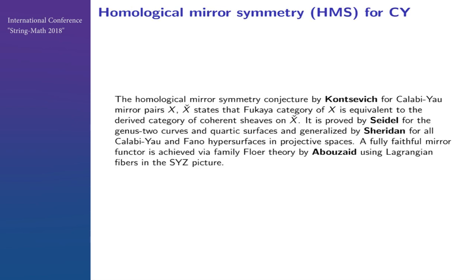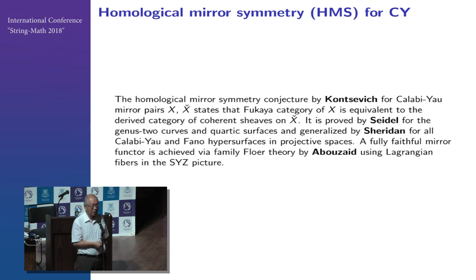Another important progress in Calabi-Yau geometry was the beautiful homological mirror symmetry proposed by Kontsevich in 1995. Amazing enough, this was found before DT theory was proposed. Kontsevich stated that for mirror geometry X and X-hat, the Fukaya category of X is equivalent to the derived category of coherent sheaves of X-hat. This was proved by Seidel, Bondal, Soibelman, and others for K3 surfaces, and generalized by Sheridan to all Calabi-Yau manifolds and Fano hypersurfaces.